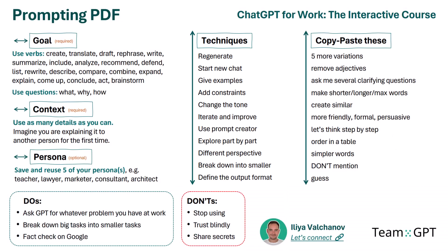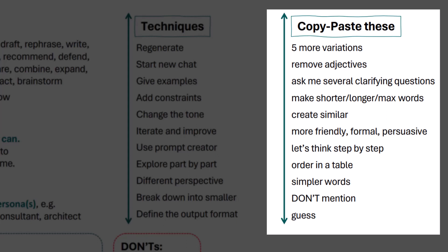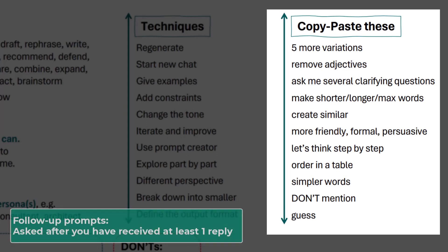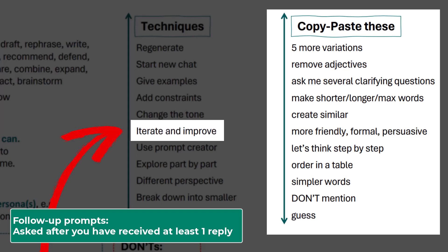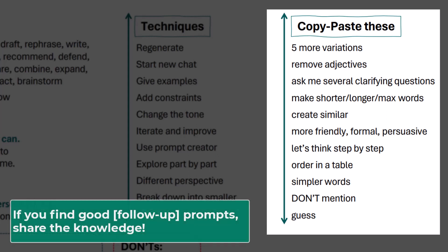The third part of the PDF: copy-paste these prompts. I call these follow-up prompts. ChatGPT is never perfect from the get-go, so use these prompts to iterate on unsatisfactory replies. I use these 11 all the time — they're not special in any other way, they simply work for me. If you find other good follow-ups, let your colleagues know or let me know. Share the knowledge.